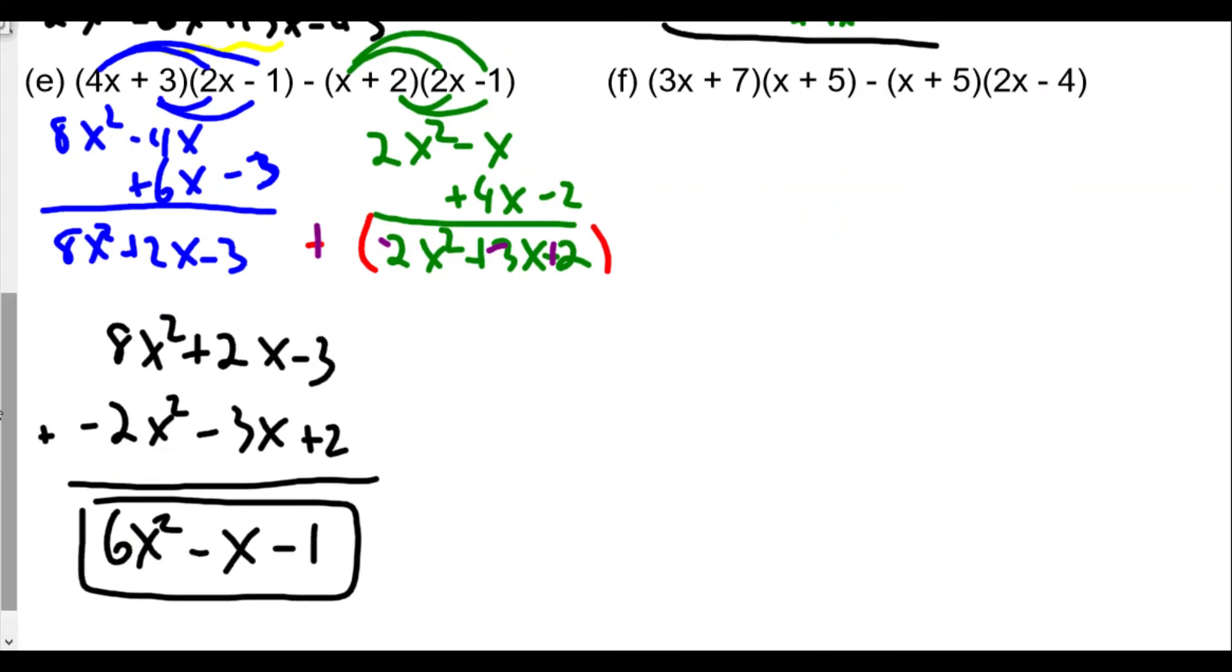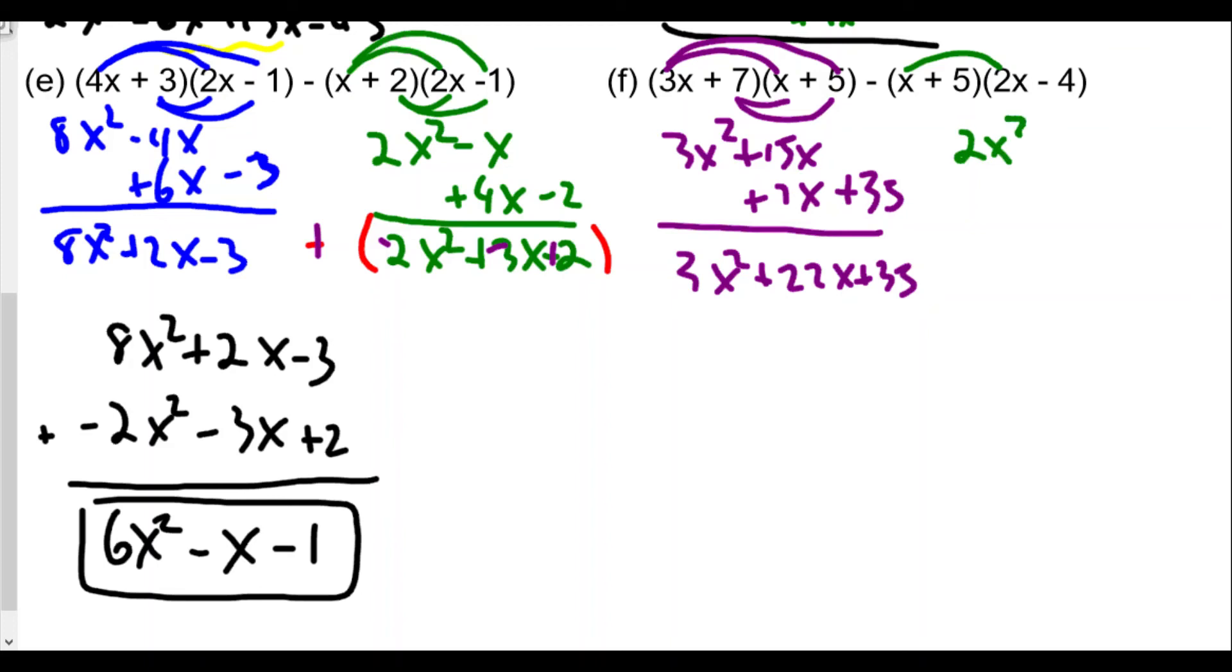For letter F, we multiply 3x times x to get 3x squared, 3x times 5 to get plus 15x, 7 times x is plus 7x, and 7 times 5 is 35. So we get 3x squared plus 22x plus 35. We continue the same as before: multiply x plus 5 times 2x minus 4 and subtract it from the first trinomial. x times 2x is 2x squared, x times negative 4 is minus 4x, 5 times 2x is plus 10x, and 5 times negative 4 is minus 20, giving us 2x squared plus 6x minus 20.